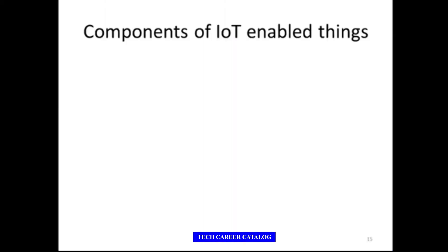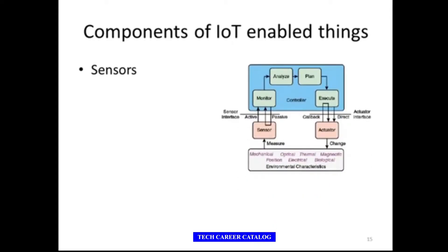The components of IoT-enabled things: first is sensors. A sensor measures a parameter of a physical, chemical, or biological entity and delivers an electronic signal proportional to the observed characteristic. It transfers that information to digital form — either analog or digital. A sensor can measure mechanical, optical, thermal, magnetic, positional, electrical, or biological parameters, then transfer data to a device to monitor, analyze, plan, and execute.